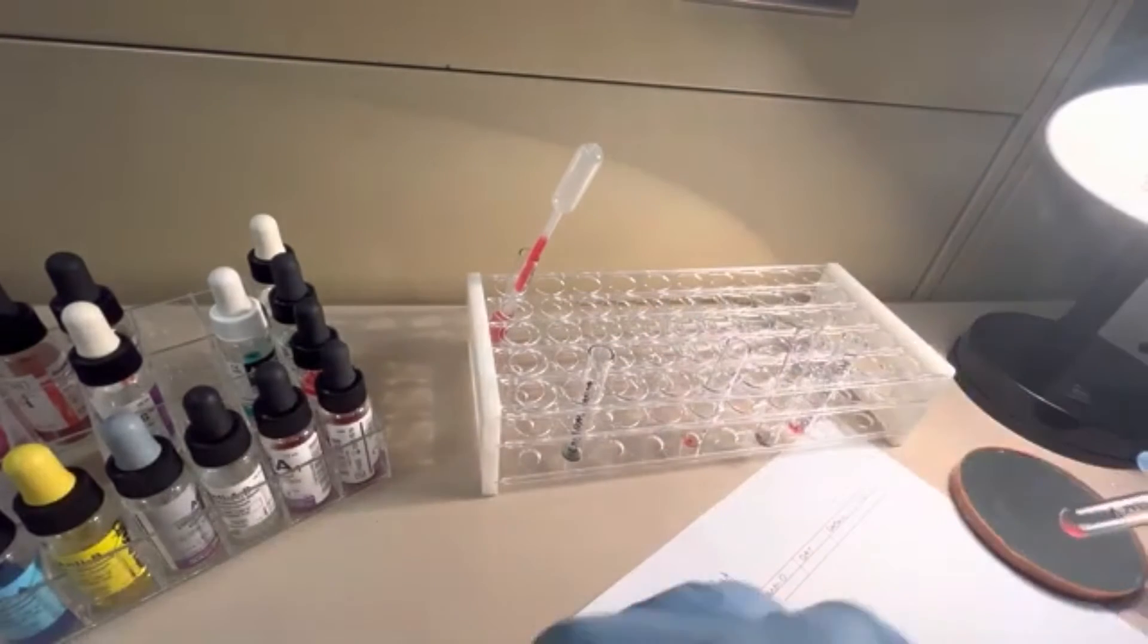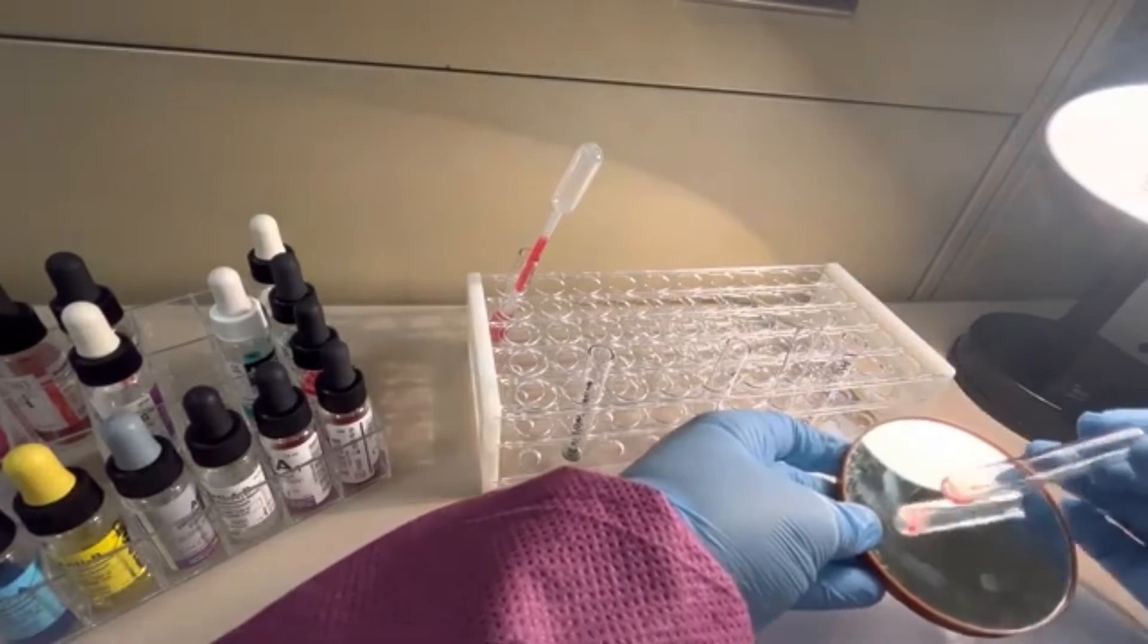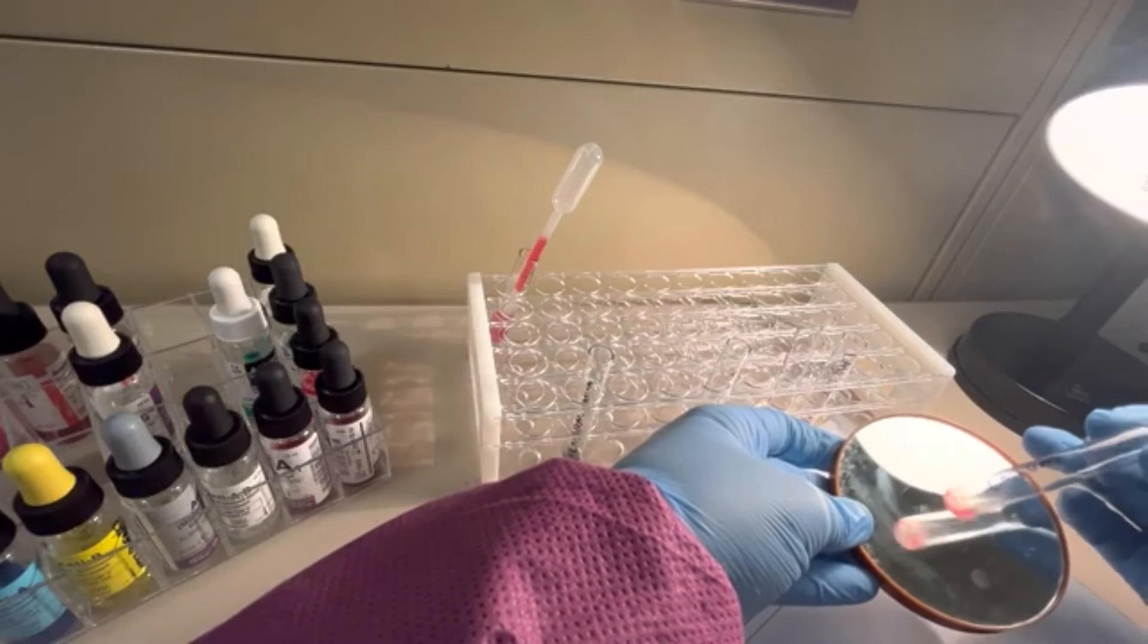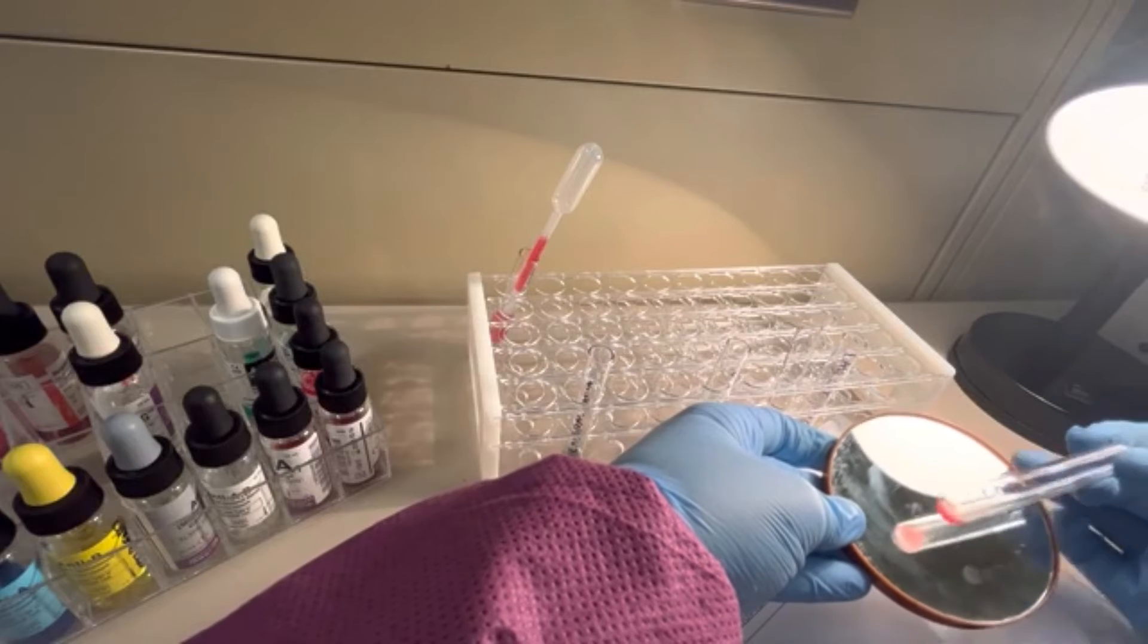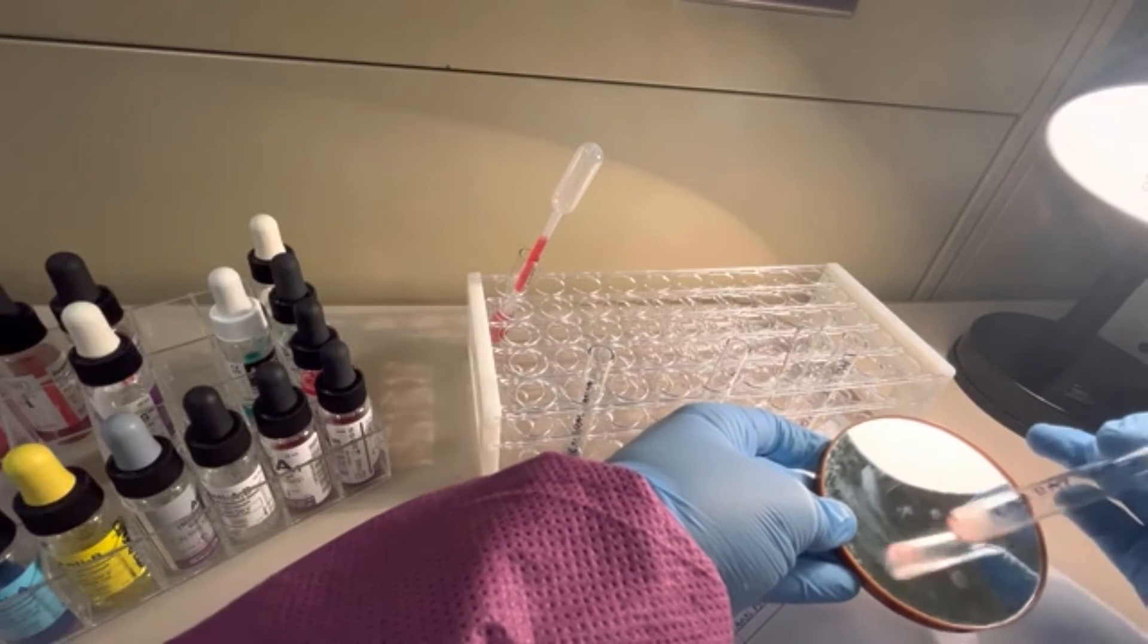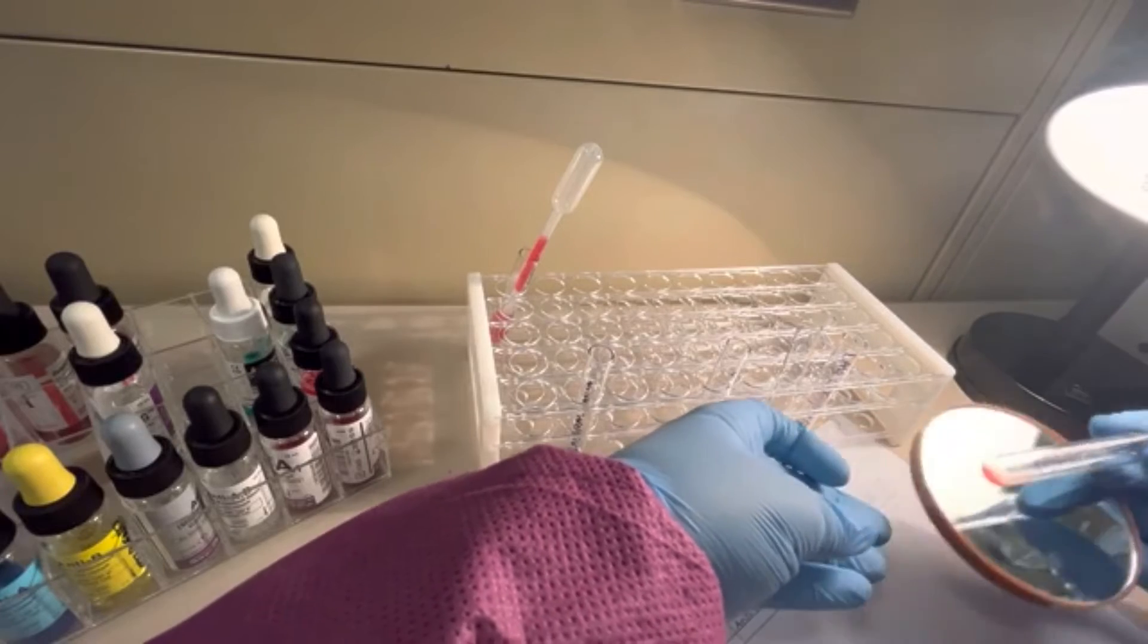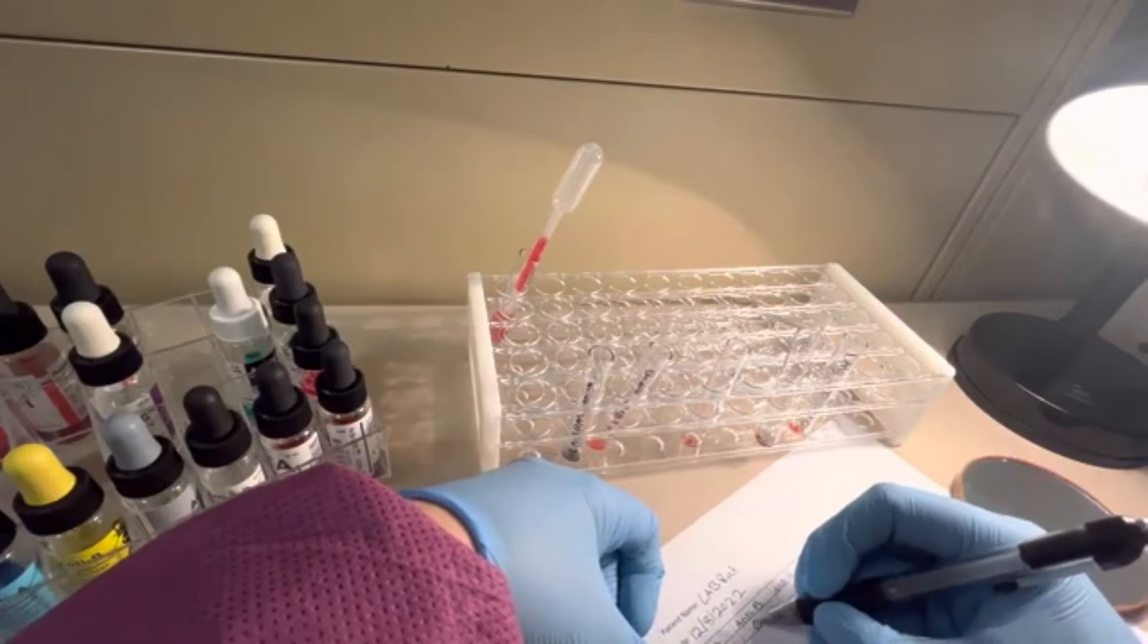Now I'm going to take my anti-B tube. Oh, this is probably going to be negative. I can tell the way it's coming off that cell button. But let's completely get rid of that cell button first before we call it. Excellent. There's no agglutination whatsoever. Anti-B is going to be zero. I'm going to record that.